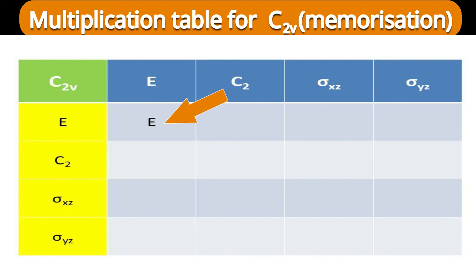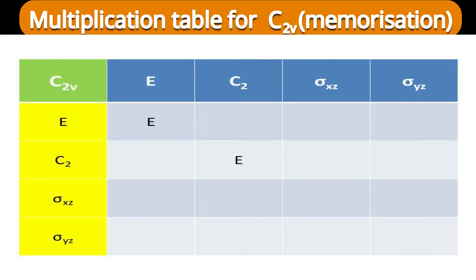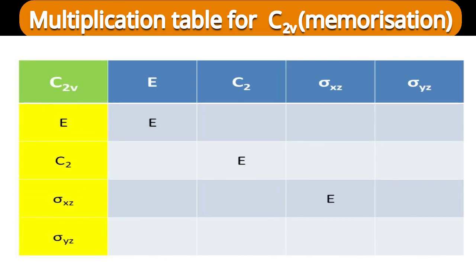We will prioritize representing results where identity is obtained on the diagonal. For C2 from the column, multiplying by C2 gives identity: 180 degrees rotated further by 180 degrees returns to identity, so C2 into C2 equals identity. Similarly, sigma XZ into sigma XZ equals identity. And sigma YZ into sigma YZ also equals identity. All diagonal positions in a square give identity.